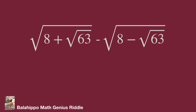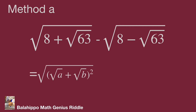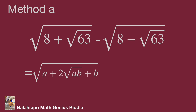The question is to find the value for these two square root items. Let us start with Method A. Check the first item: square root of 8 plus √63. If we would like to simplify it, the expression within the square root should be a perfect square. So we can write it as the square root of (√A + √B) squared, which expands to A plus 2√(AB) plus B.